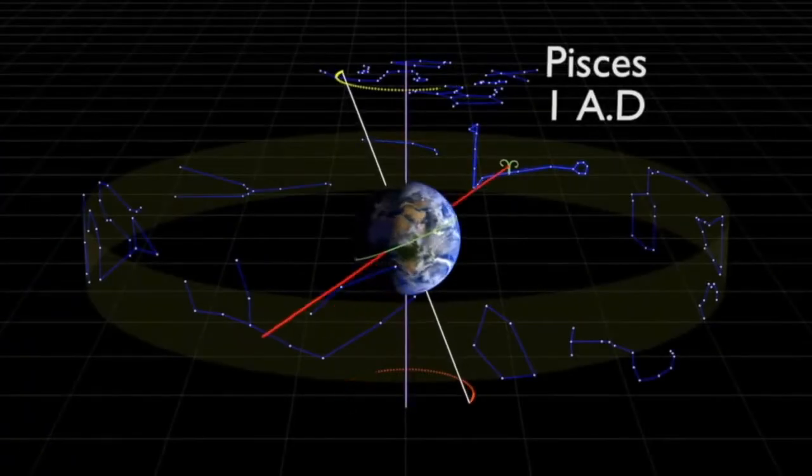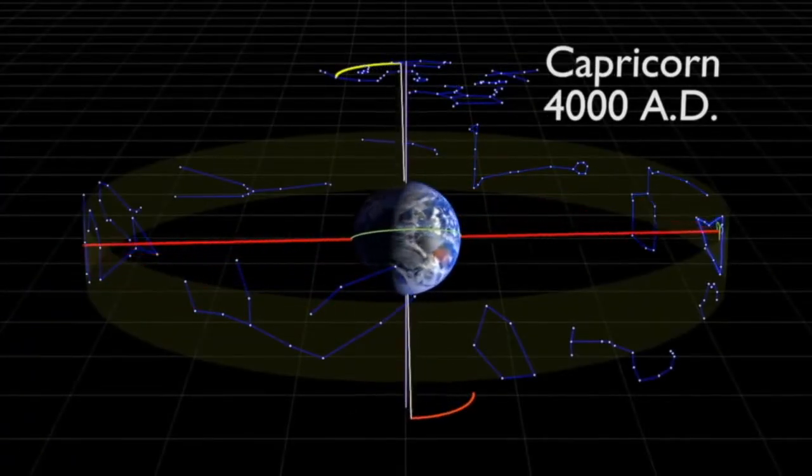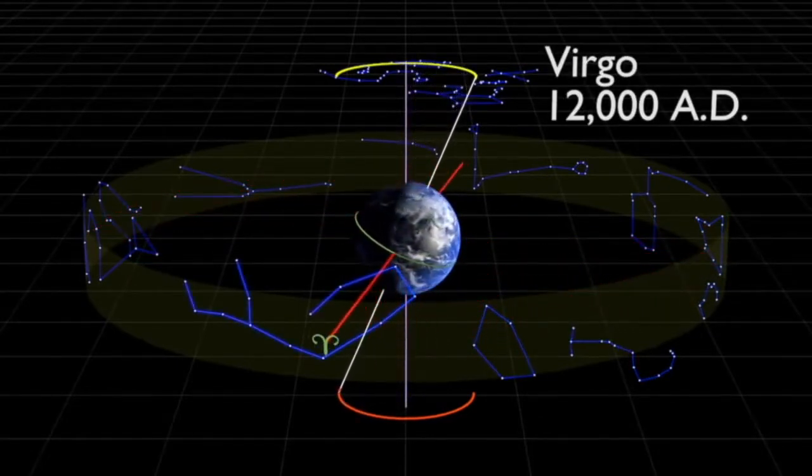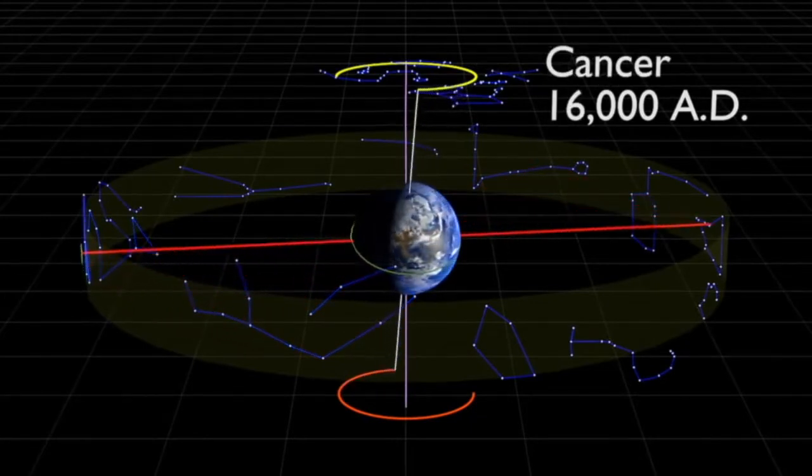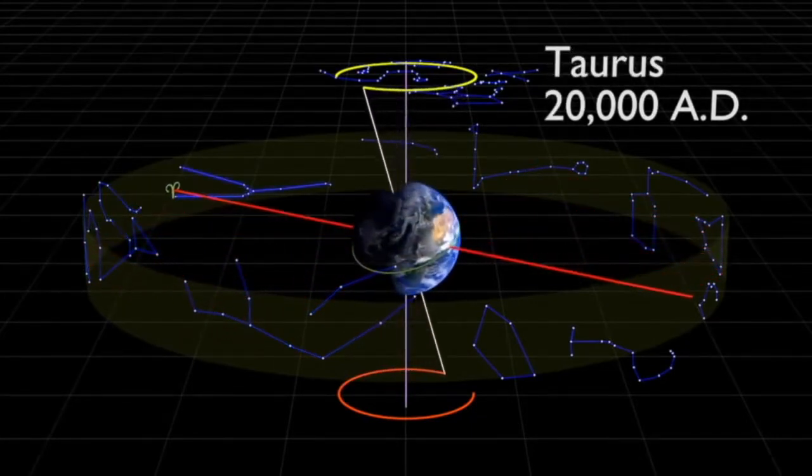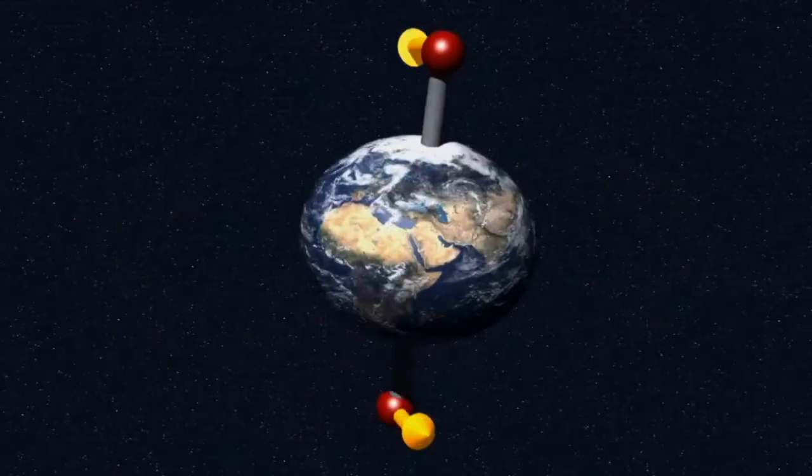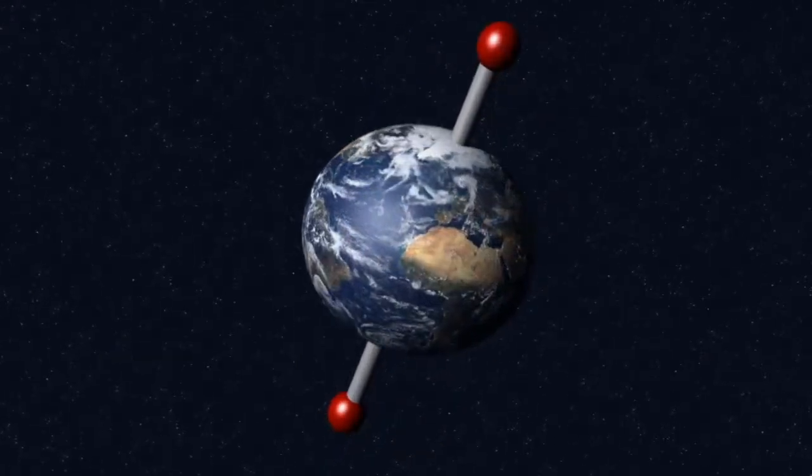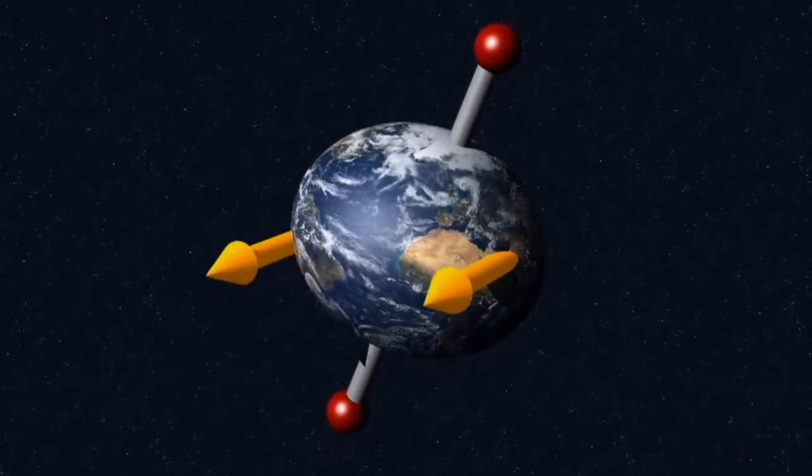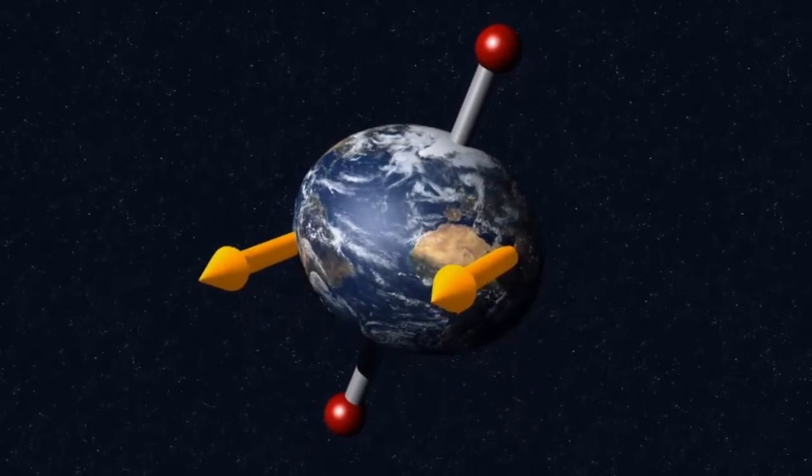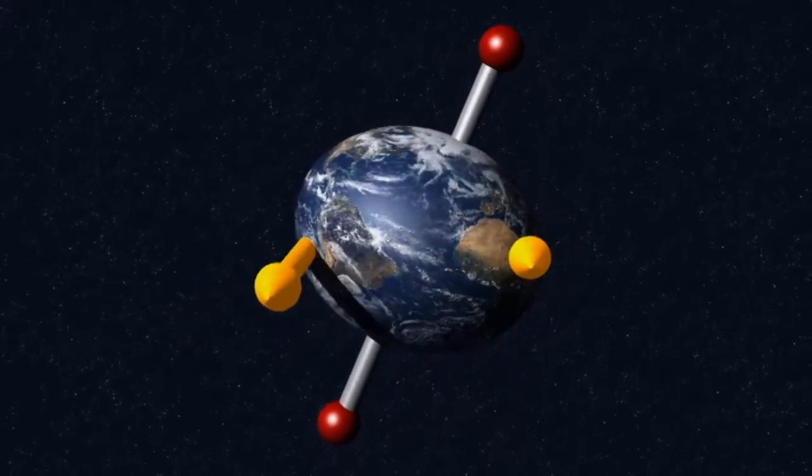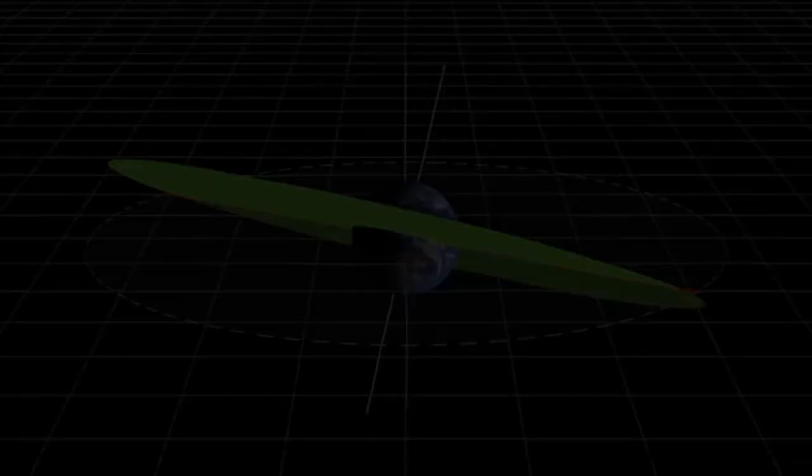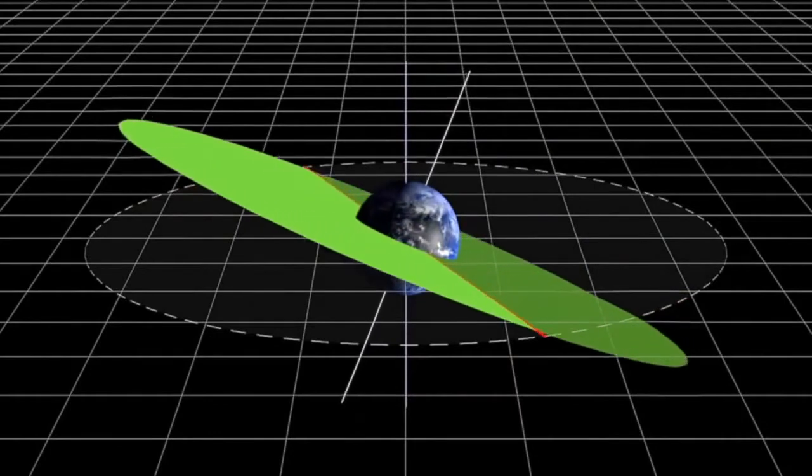La precessione degli equinozi è uno dei moti della Terra che fa cambiare in modo lento ma continuo l'orientamento del suo asse di rotazione rispetto alla sfera delle stelle fisse. L'asse terrestre subisce una precessione, ovvero una rotazione dell'asse intorno alla perpendicolare all'eclittica, un movimento simile a quello di una trottola a causa dell'interazione di due fattori: la forma non perfettamente sferica della Terra e le forze gravitazionali della Luna e del Sole che, agendo sulla sporgenza equatoriale,